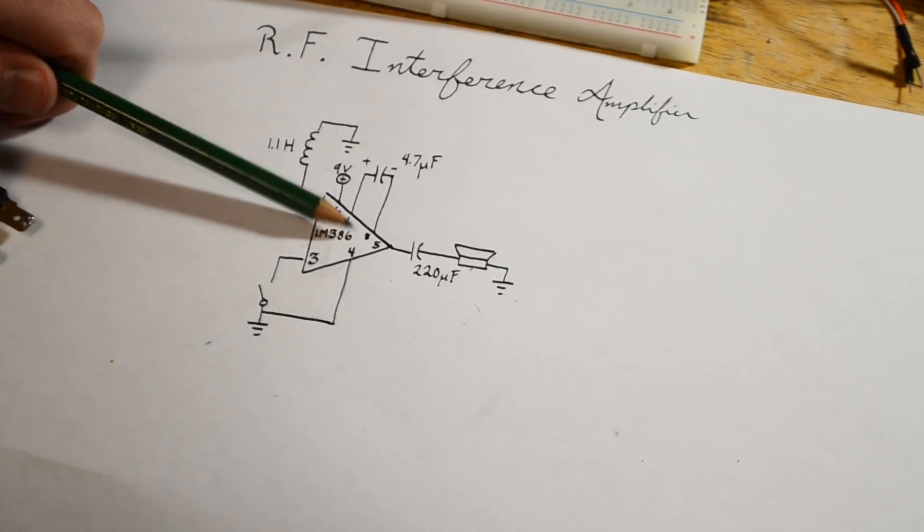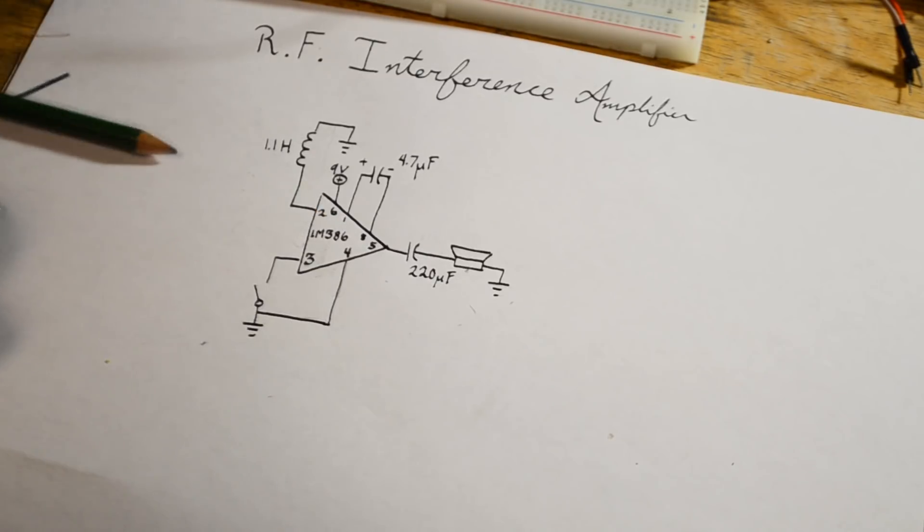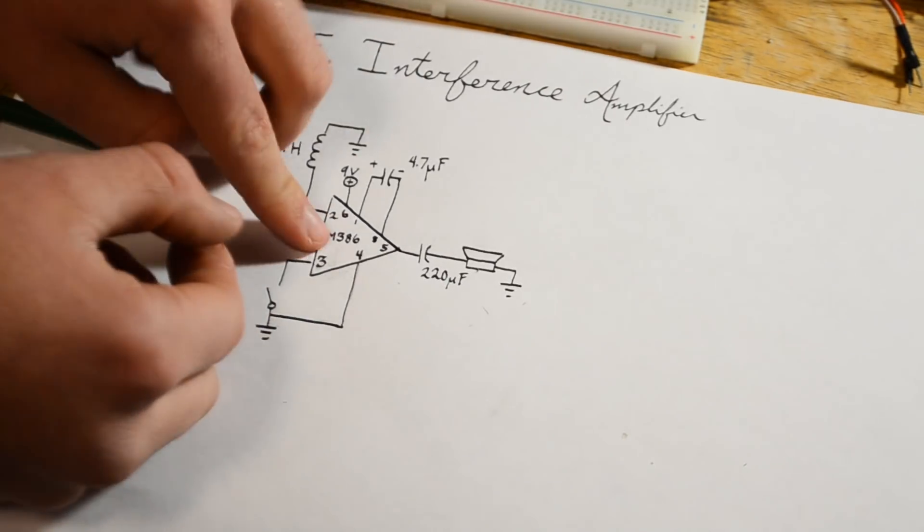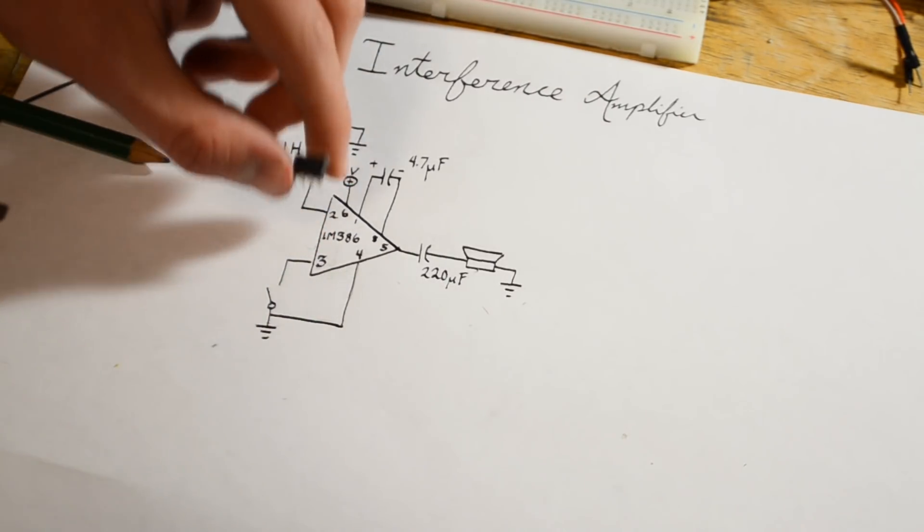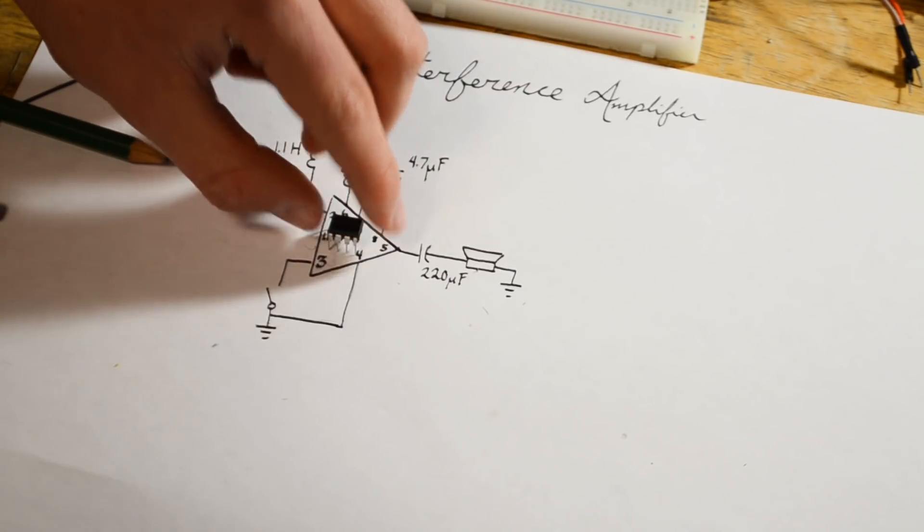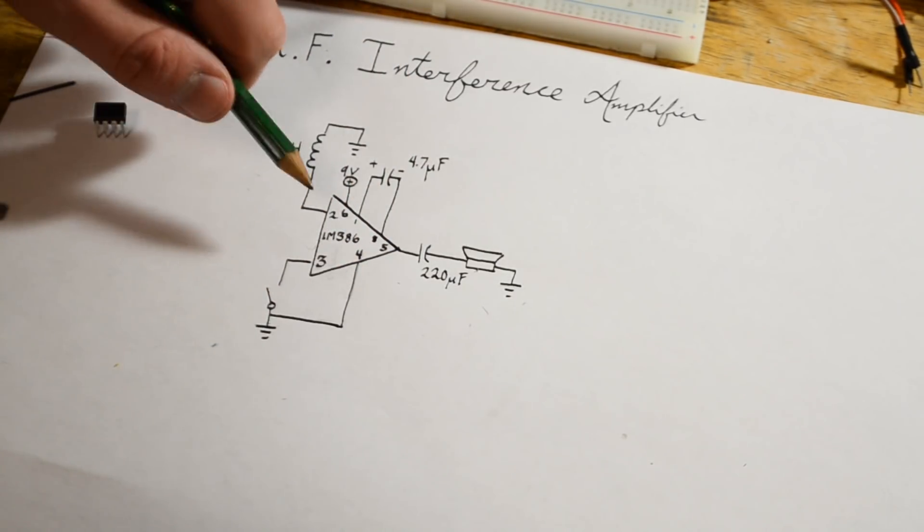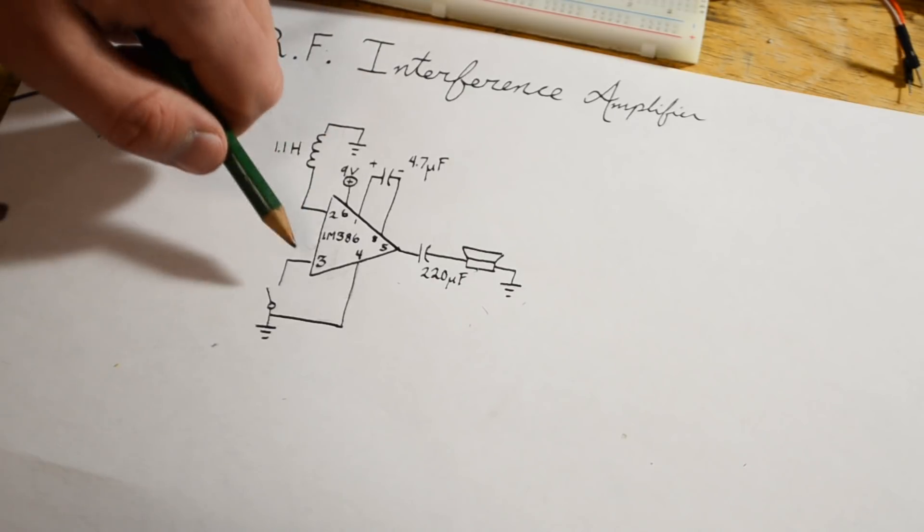Alright, so this is the circuit that we're going to be using for this video. Now this circuit uses something called an LM386 amplifier. This is a dedicated audio amplifying integrated circuit. And what you can do is input a voltage between pins 2 and 3, and you can get an amplified voltage on pin 5.